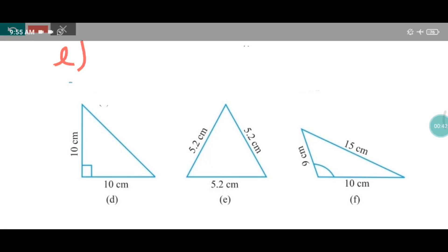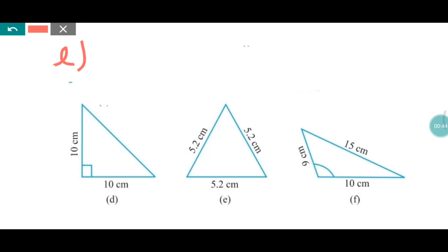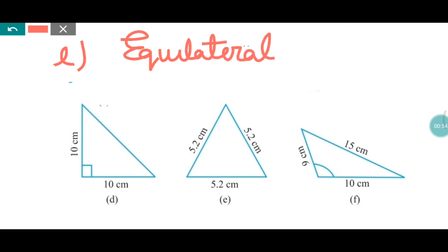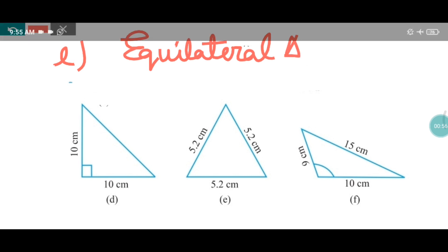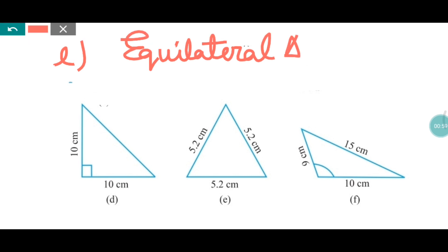Now here you can see all three sides are equal: 5.2, 5.2, and 5.2. That is why it is an equilateral triangle. And all three angles are acute, so it is also an acute angled triangle.